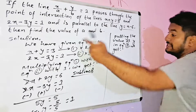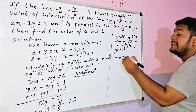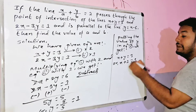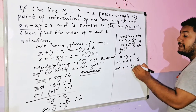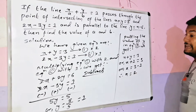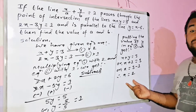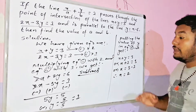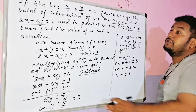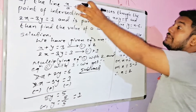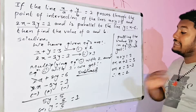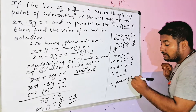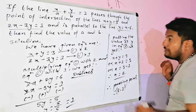Putting the value of y in equation 1, we get x + y = 3, so x + 1 = 3, therefore x = 3 - 1 = 2. So the value of x is 2 and y is 1. The point of intersection is (2, 1).